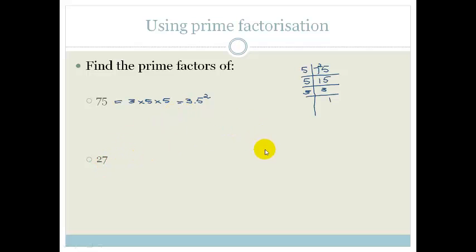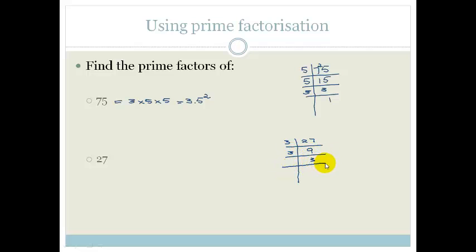Now you can see why this is applicable when talking about exponents. Let's look at 27. I want the smallest prime number that can go into 27. The smallest prime number is 2, but 2 doesn't go into 27, so let's go to 3. 3 goes into 27 nine times, then 3 goes into 9 three times, and 3 goes into 3 once. So we could rewrite 27 as 3 times 3 times 3, or 3 to the power of 3.